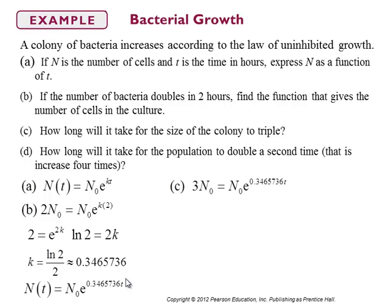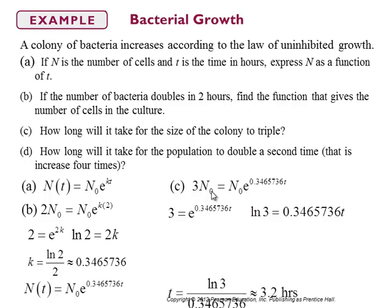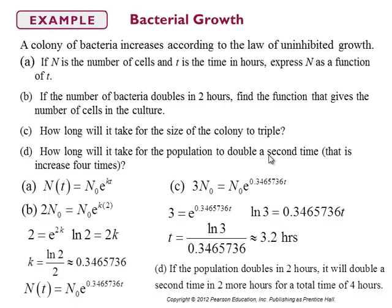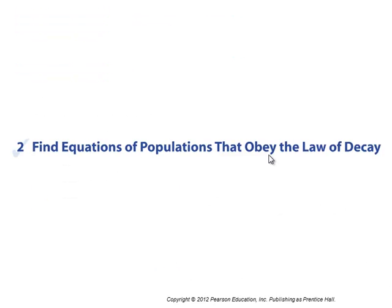Part C: how long will it take for the size of the colony to triple? Set N equal to 3 times N₀ and solve for T. That works out to be 3.2 hours. Part D: how long will it take for the population to double a second time, meaning increase by four times? Because it doubles in two hours, it's going to double again at four hours total.